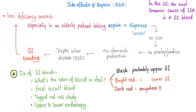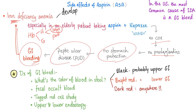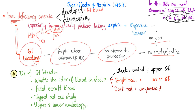Aspirin can lead to iron deficiency anemia because aspirin is bad for your stomach — no prostaglandin means no stomach protection, leading to peptic ulcer disease, GI bleed. When you bleed, you lose red blood cells and hemoglobin. Hemoglobin consists of heme and globin; heme is made of iron and protoporphyrin. When you lose iron through vomiting or stool, you end up with iron deficiency anemia — which starts as normocytic but turns microcytic. The most common cause of iron deficiency anemia in developed countries is GI bleed; in developing countries, it's nutritional.